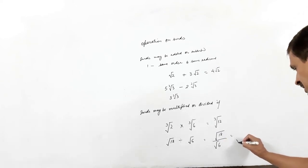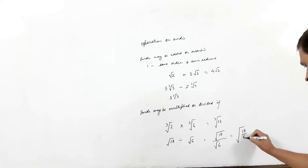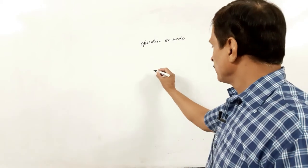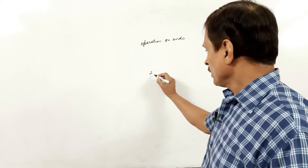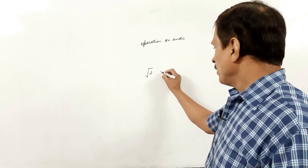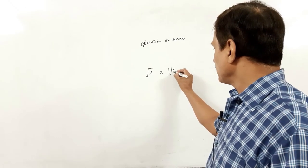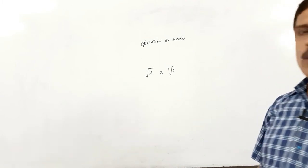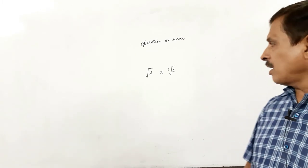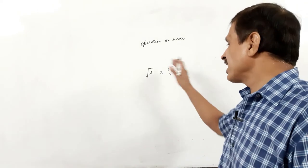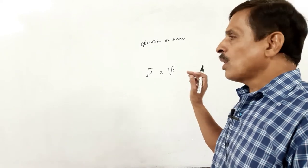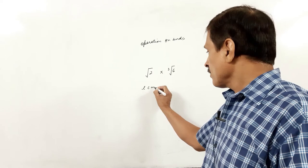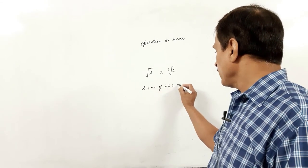If the orders of the surds are not the same, for example square root of 2 multiplied by cube root of 6, before multiplying their orders must be converted to similar orders. The LCM of orders 2 and 3 is 6, so we convert both surds to order 6.